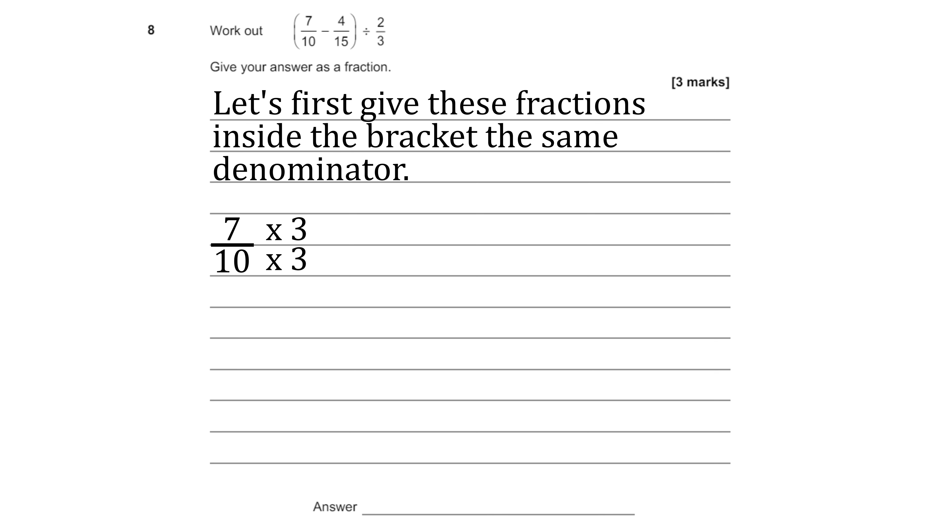Starting with the 7 over 10 well we just have to times top and bottom by 3 because 3 times 10 is 30. So taking 7 over 10 that is going to be equivalent to 21 over 30. It's the same fraction value we've just written a different way so it's more functional for us. Next we have 4 over 15 so let's times top and bottom by 2. That's going to give us 8 over 30 and now we've got these alternative ways of looking at these fractions.